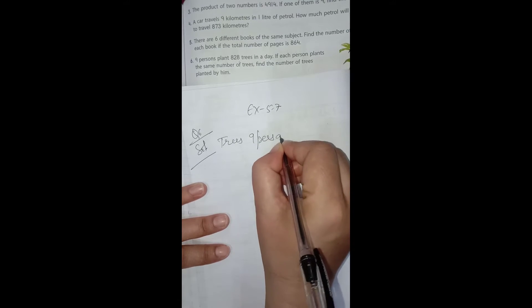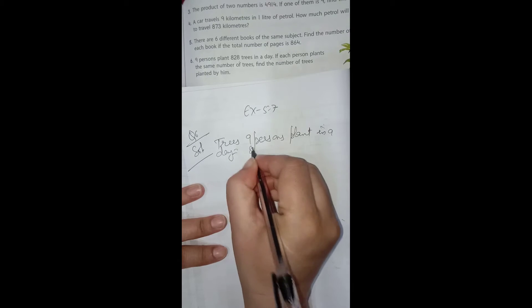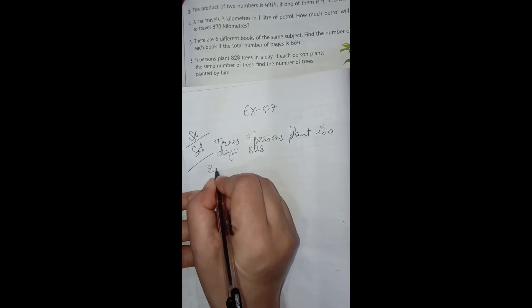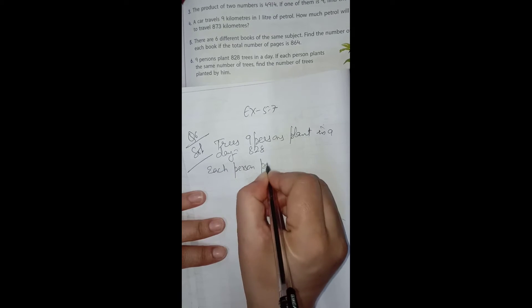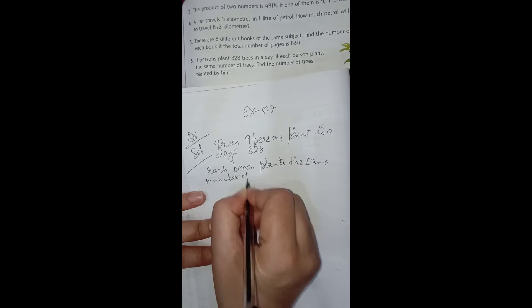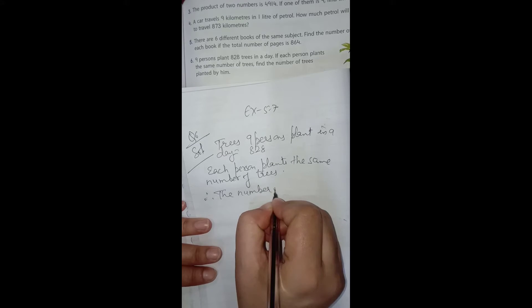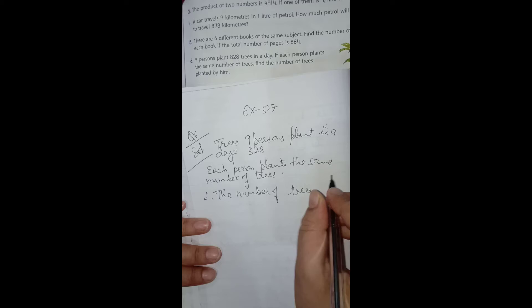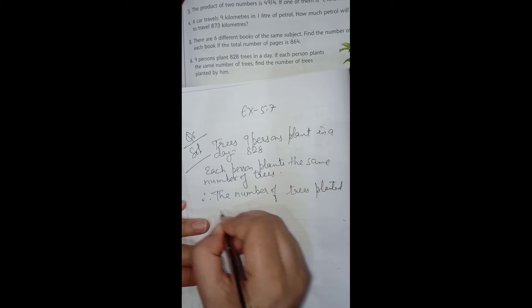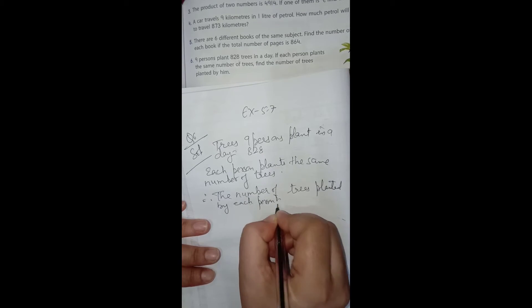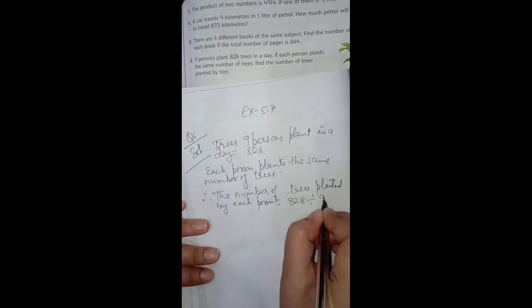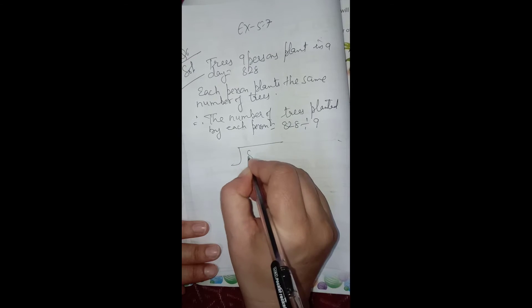Trees 9 persons plant in a day is equal to 828. Each person plants the same number of trees. Therefore, the number of trees planted by each person will be 828 divided by 9. Now let us divide 828 by 9.